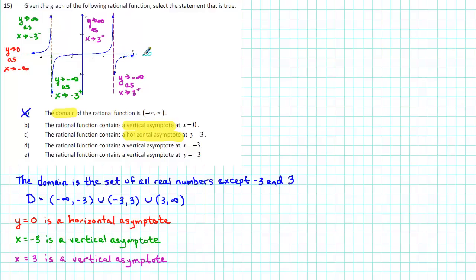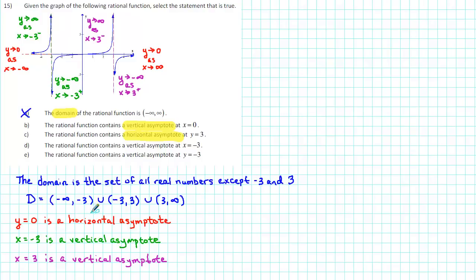Finally, we reach the right-hand side of the graph where x is increasing without boundary. As x increases without boundary, the graph is getting arbitrarily close to the x-axis — in other words, the y values are approaching 0. Symbolically, y approaches 0 as x approaches infinity. This reinforces the idea that y equals 0 is a horizontal asymptote.